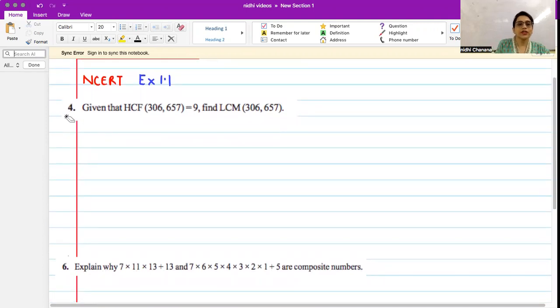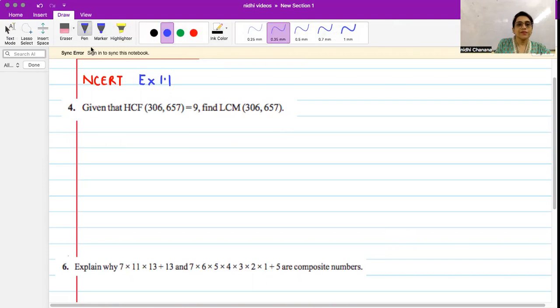Let's start with question number 4. The question says: Given that the HCF of two numbers 306 and 657 is 9, find the LCM of these two numbers.